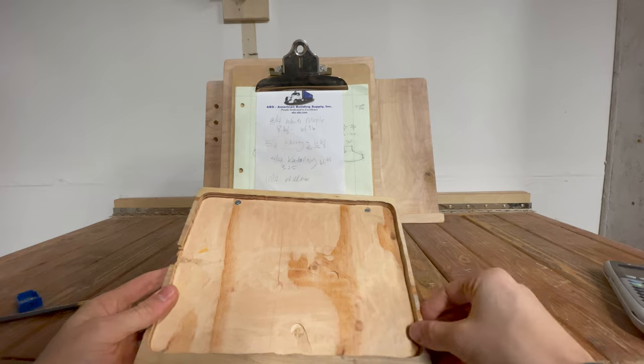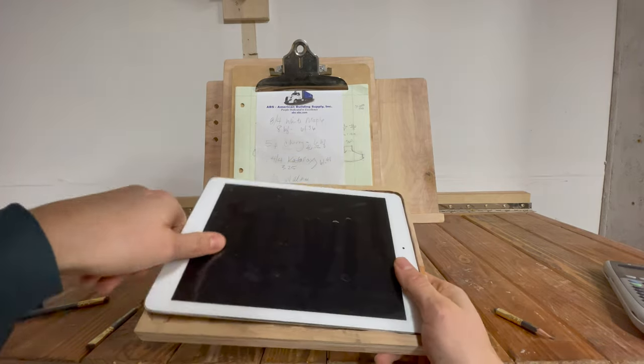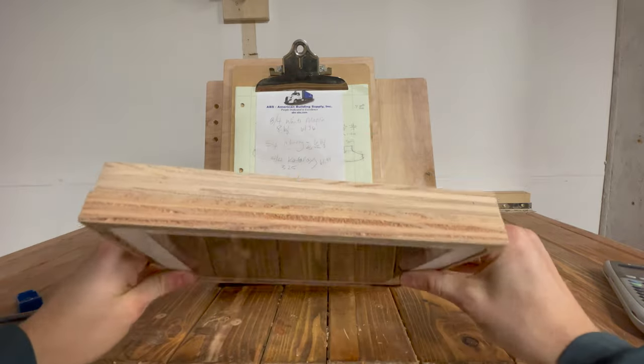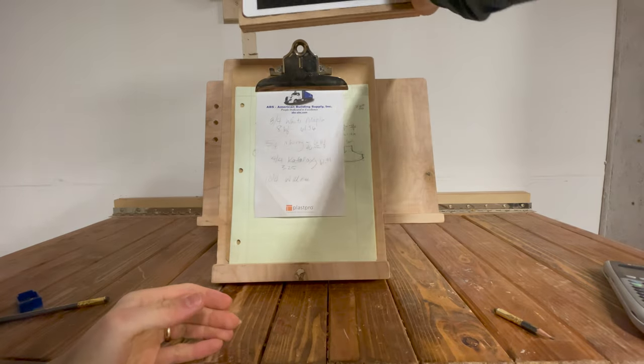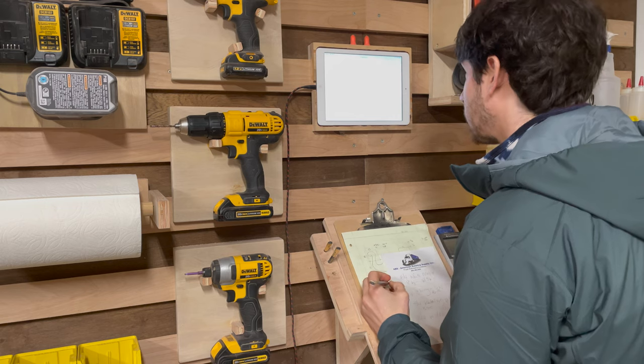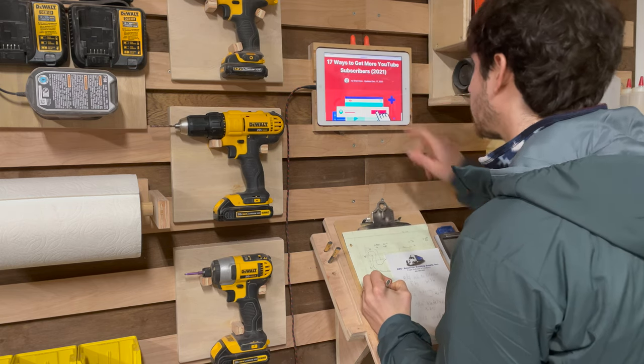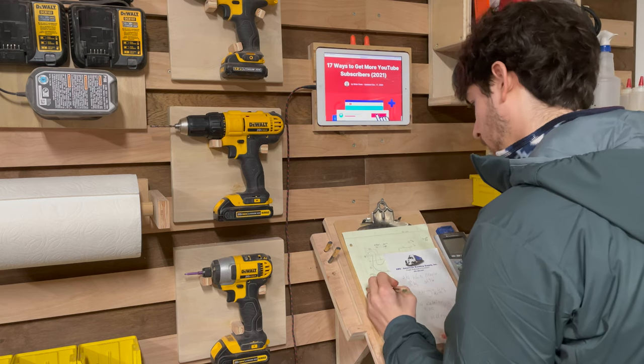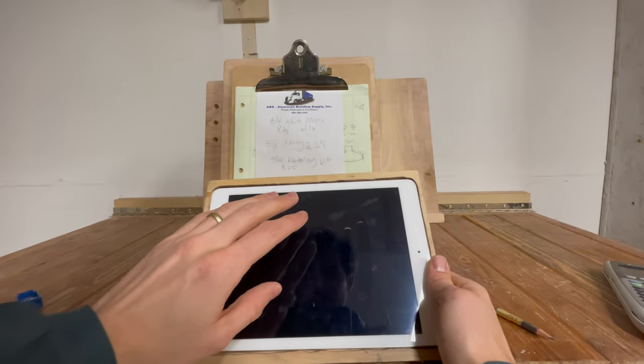This can just slip in here and holds itself in by friction, and you've got an iPad monitor. This usually sits right on top of my French cleat desk in case I need to be able to look anything up, look up a calculation, or any sort of research needed. It also controls my Bluetooth headphones.